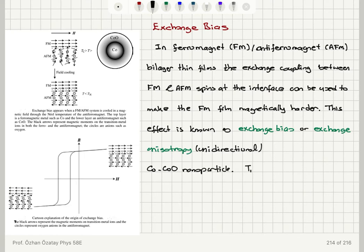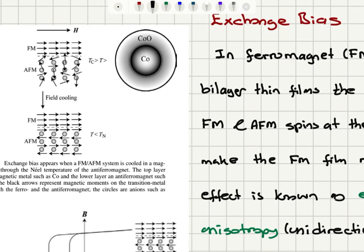The Néel temperature of cobalt monoxide is 293 Kelvin. First, we are above the Néel temperature of cobalt monoxide but below the Curie temperature of the ferromagnet, so the antiferromagnetic moments are essentially paramagnetic. Due to the exchange at the interface, if we apply a magnetic field H to the right — this is our cooling field — and then cool below the Néel temperature in the presence of this field...